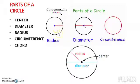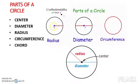When you draw a line from the center of the circle to the circumference of the circle, it is called a radius. It can be anywhere in the circle from center to the circumference.